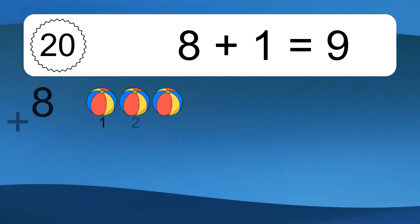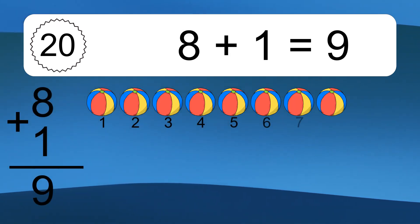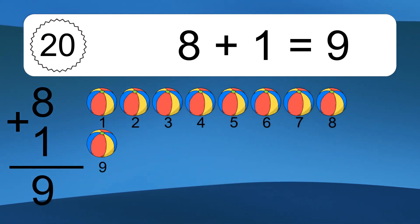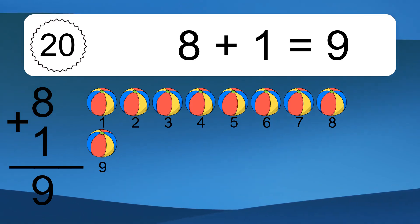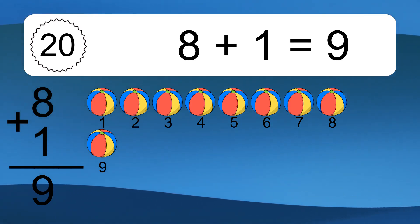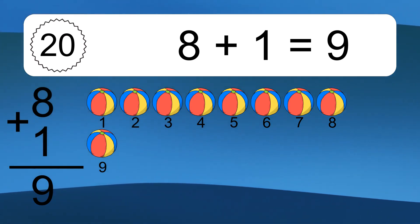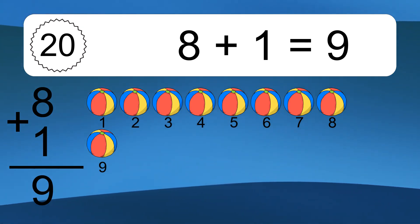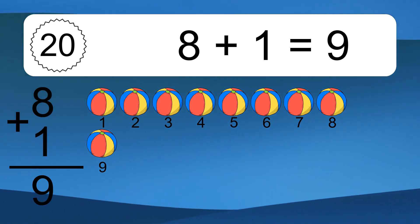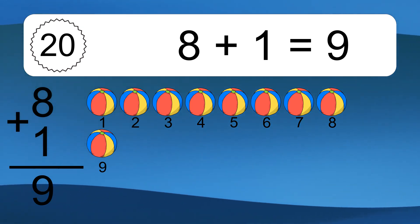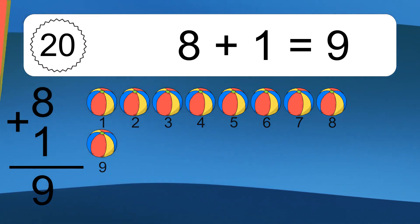8 plus 1 equals 9. Let's count it. 1, 2, 3, 4, 5, 6, 7, 8, 9.